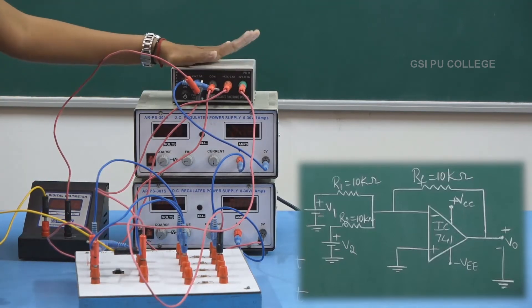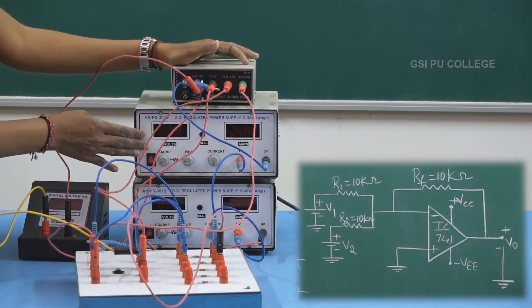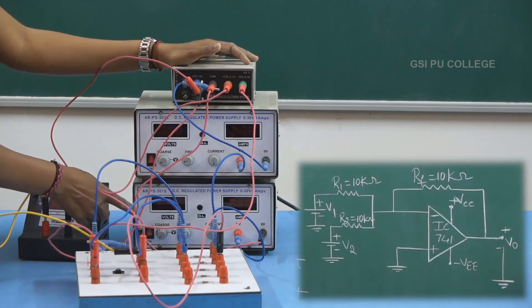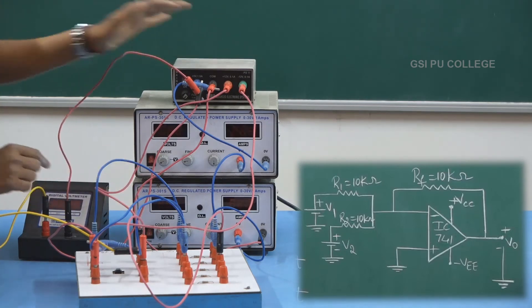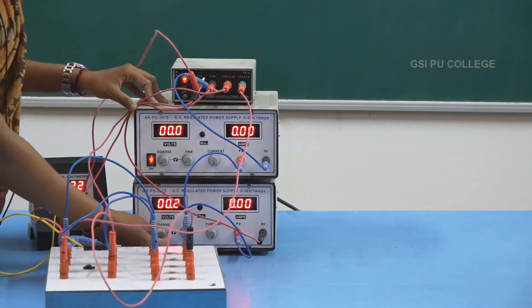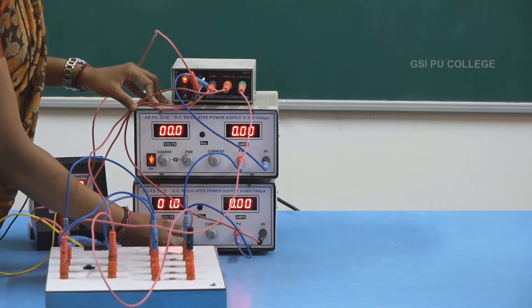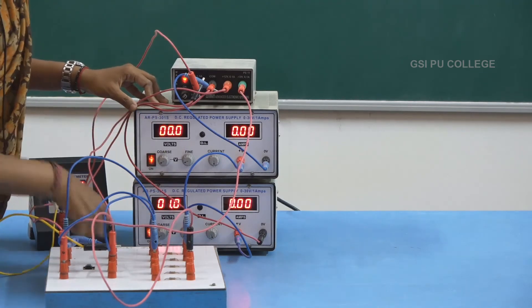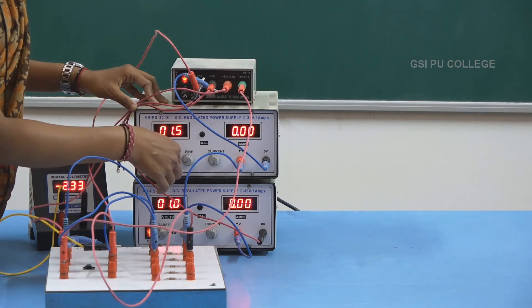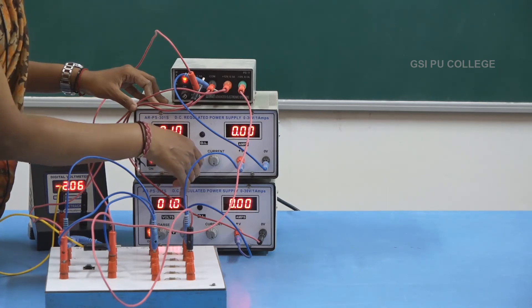This is the complete connection required to conduct the experiment — op-amp as an adder — using two RPS units, V1 and V2. Now we are going to vary the voltage in steps and note down the voltmeter reading. Before that, let us turn on the power supply. After turning on the operators, we set V1 to 1 volt and V2 to 1 volt.